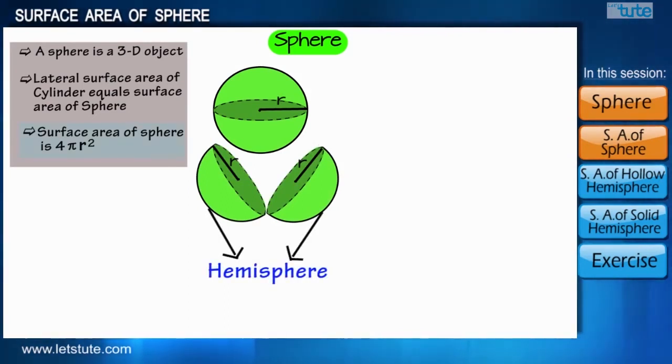So guys, if surface area of a sphere is 4πr², then what would be the surface area of a hemisphere? Well, we think that it would be half of the surface area of a sphere, that is 2πr². Which is correct, but only in the case of a hollow hemisphere.